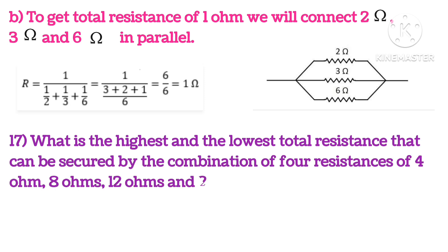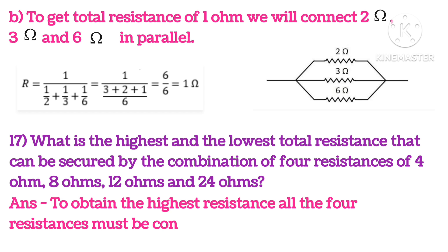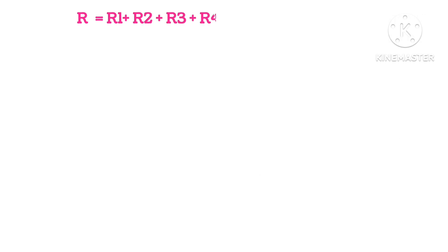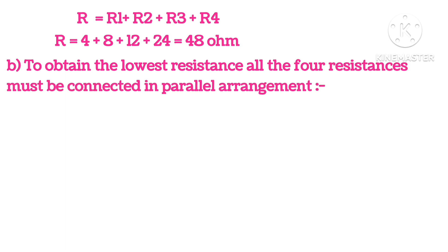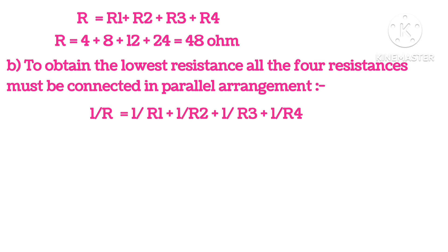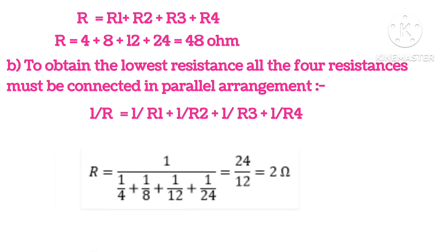What is the highest and lowest total resistance that can be secured by combining four resistances of 4, 8, 12, and 24 ohms? To obtain the highest resistance, all four resistances must be connected in series: R = R1 + R2 + R3 + R4 = 48 ohms. To obtain the lowest resistance, all four resistances must be connected in parallel, giving R = 2 ohms.